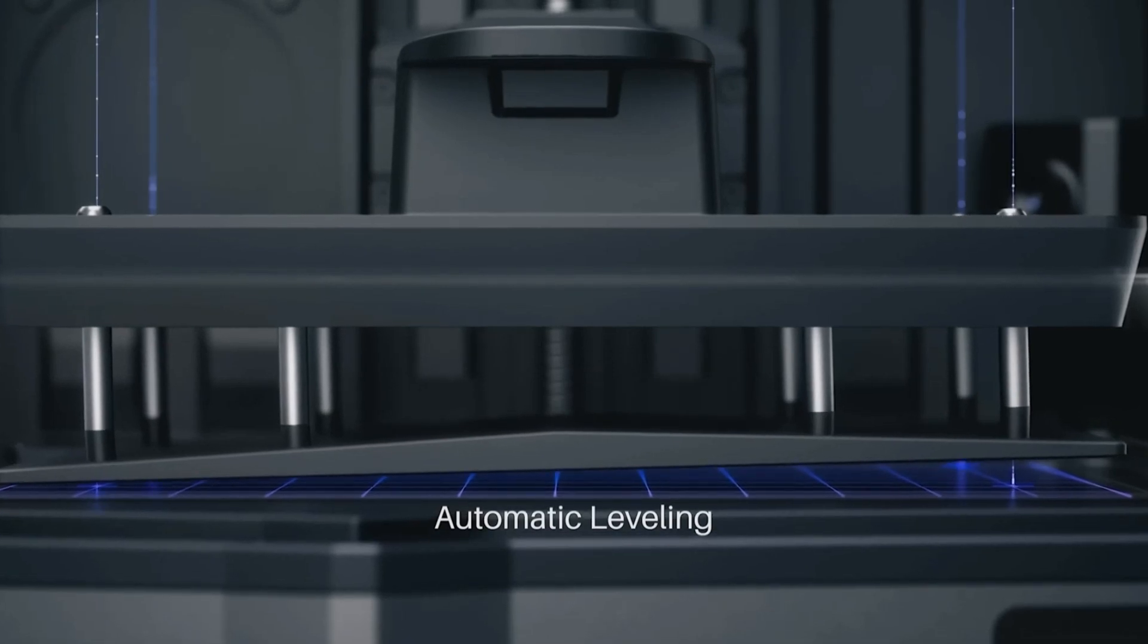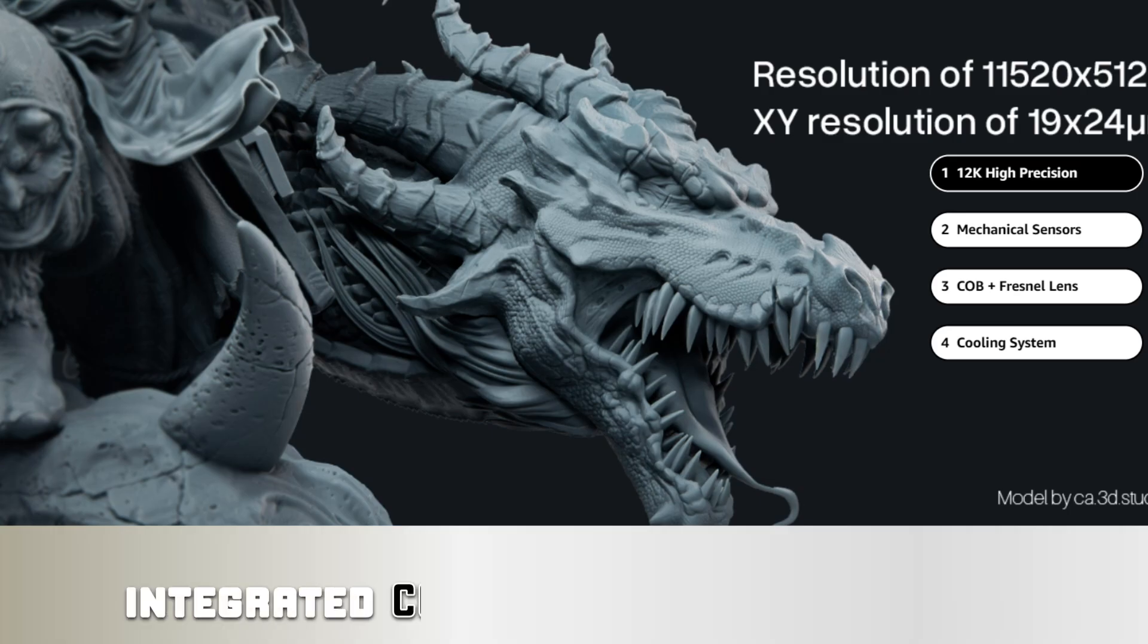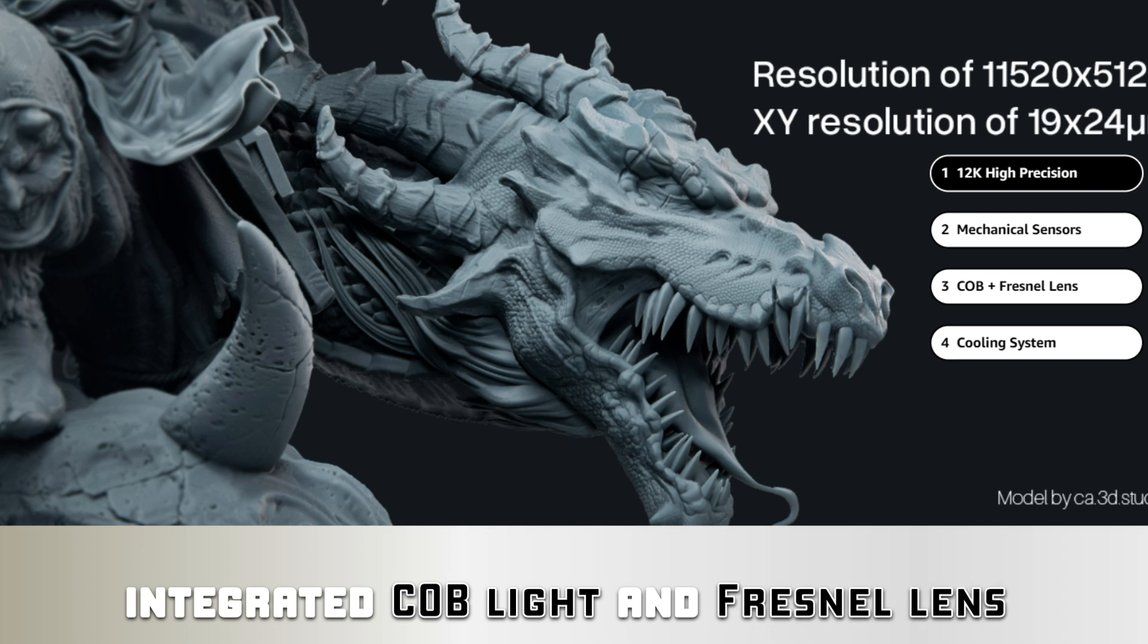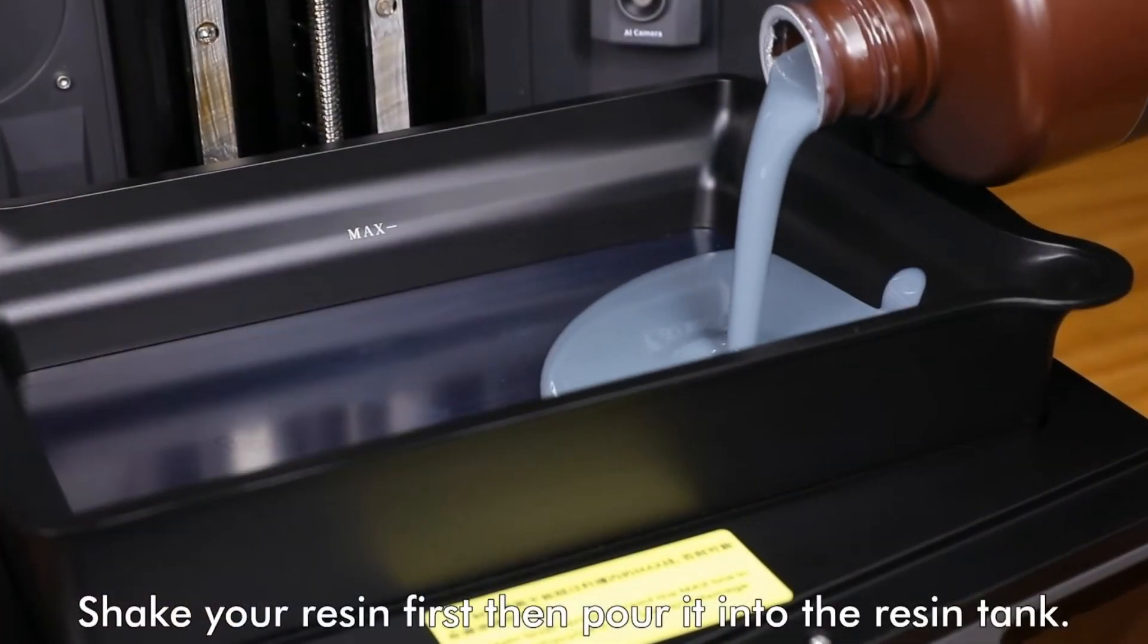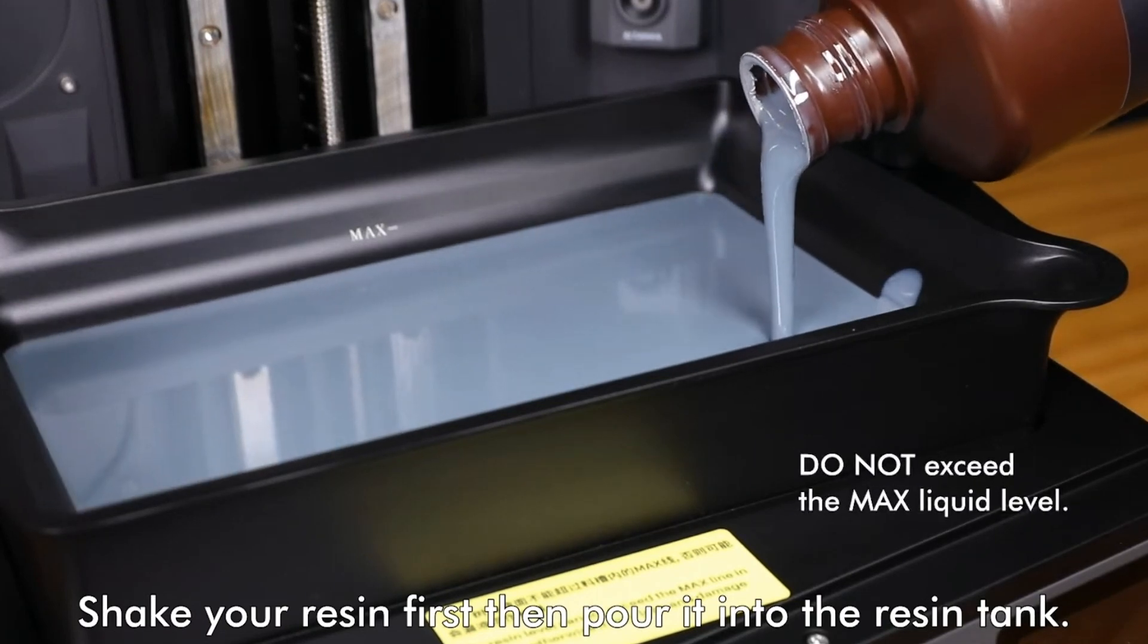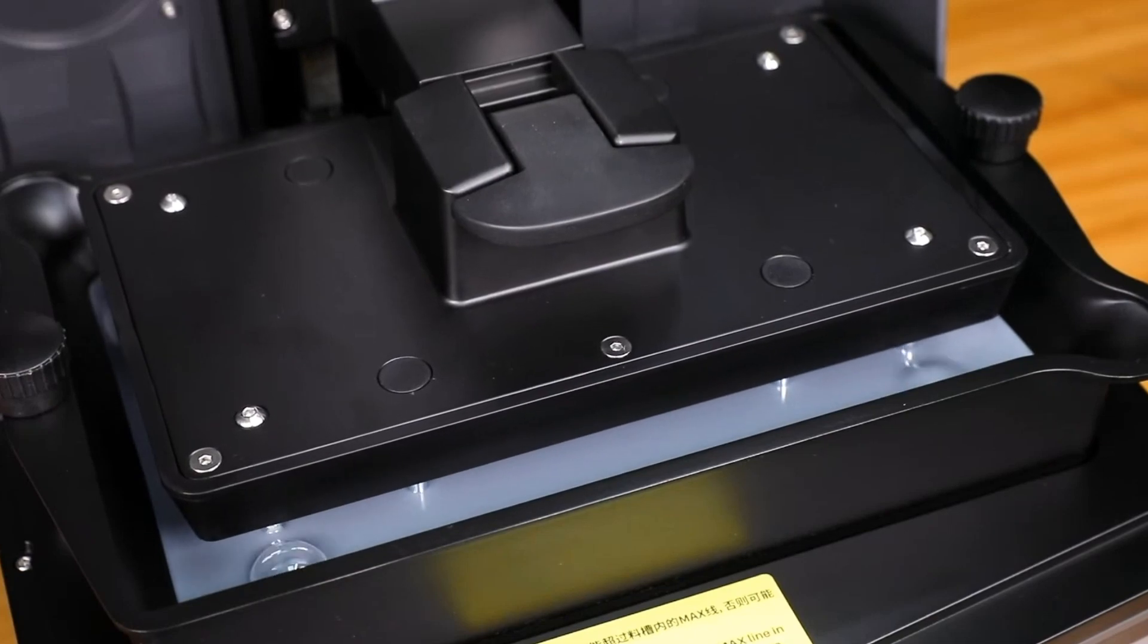Its intelligent self-check and auto-bed leveling features provide a hassle-free printing experience. With the integrated COB light and Fresnel lens, it achieves highly accurate and consistent printing results with exceptional clarity. This printer is equipped with intelligent failure detection systems, including foreign object detection, resin shortage, and leveling failure alarms, enhancing the safety and reliability of the printing process.